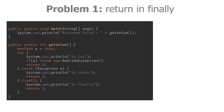Our first problem is where we need to predict the output. You can see there is a getValue method being called from the main method, printing the return value from this getValue method. There are try, catch and finally blocks inside this getValue. We are returning different values from each of these blocks. We are also printing in try, in catch, and in finally so that we know which block we are currently in. Let's go through this program line by line together and try to predict what the output will be.